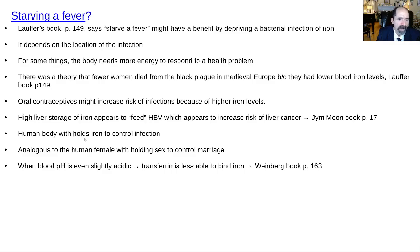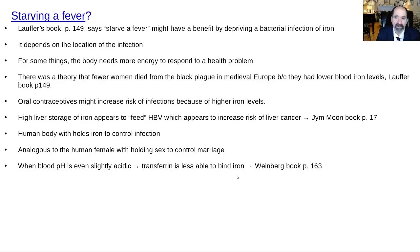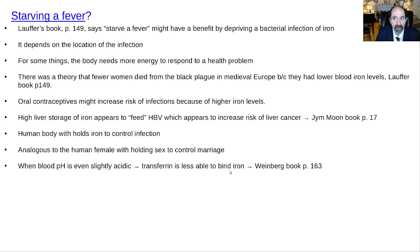The human body withholds iron to control infections. When blood pH is even slightly acidic, transferrin is less able to bind iron — and increased bodily acidity is associated with increased cancer risk. Cancer cells need iron in a big way to grow. Things that make you more acidic also free up more iron to circulate in the blood and potentially go to cancer cells.